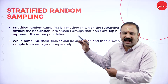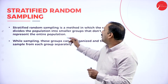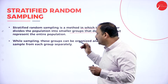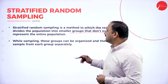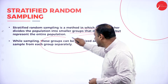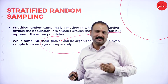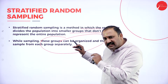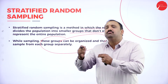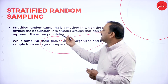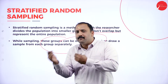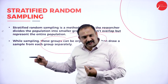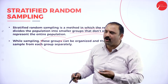Stratified random sampling, as the name suggests, is a methodology in which the researcher divides the population into smaller groups that don't overlap but represent the entire population. While sampling, these groups can be organized and a sample drawn from each group separately. The key point is not using an overlapping methodology — not cutting across one population group into another.